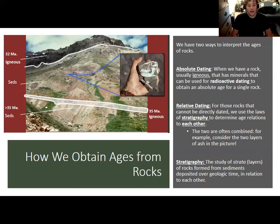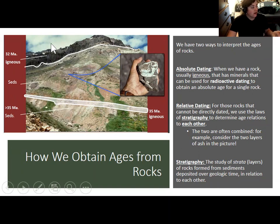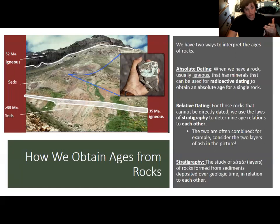A student answers: probably because it's just broken-down rock. Exactly — it's made of lots of different broken-down rocks with different origins. Dating one grain might tell you when the rock that grain eroded from formed, but not when the sedimentary rock itself formed. What we can do is use two dated igneous layers as brackets: an ash layer dated at 35 million years and a lava flow at the top dated at 32 million years.